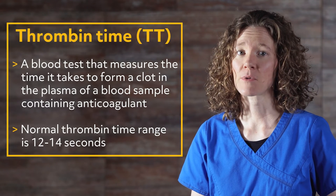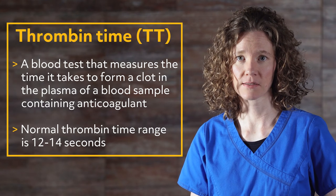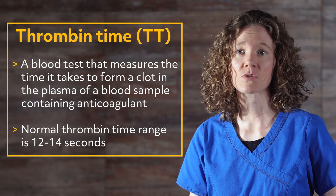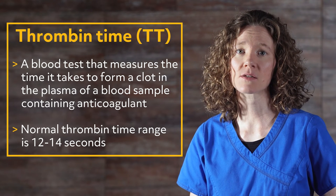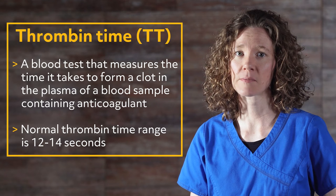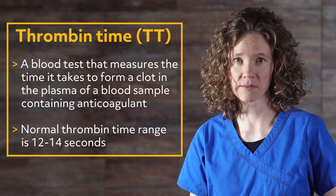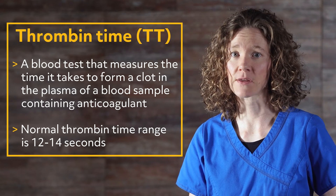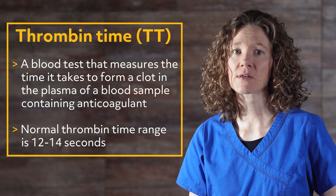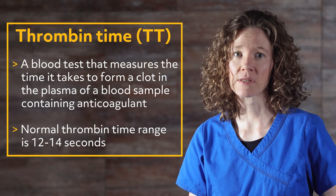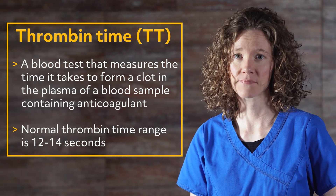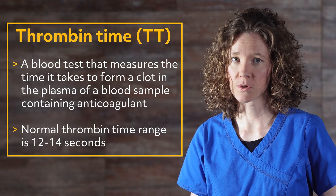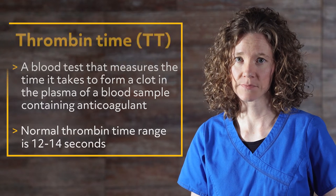Thrombin time, also known as thrombin clotting time, is a blood test that measures the time it takes to form a clot in the plasma of a blood sample containing anticoagulant after an excess of thrombin has been added. Normal thrombin time range is 12 to 14 seconds.